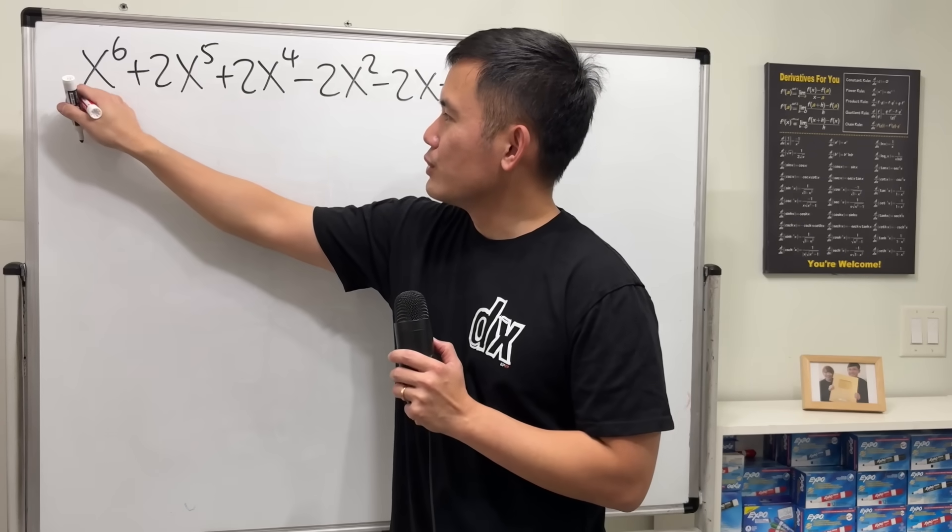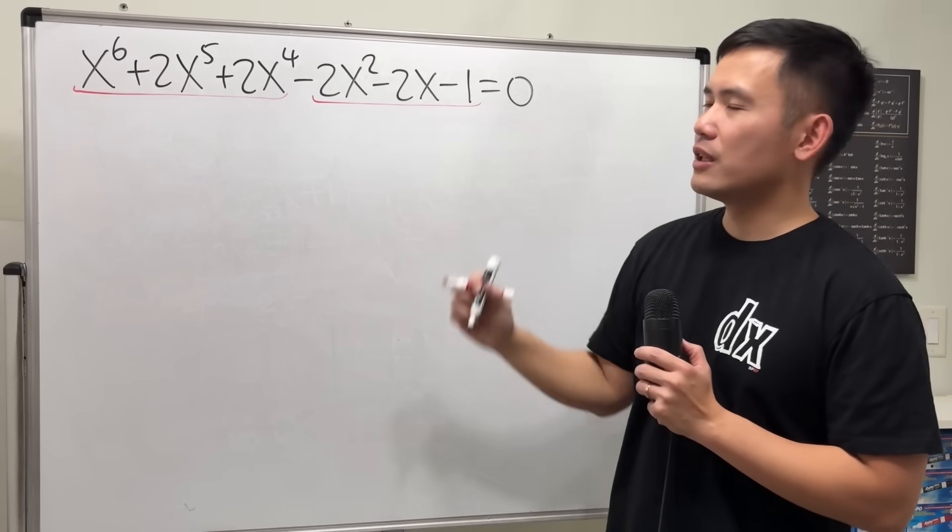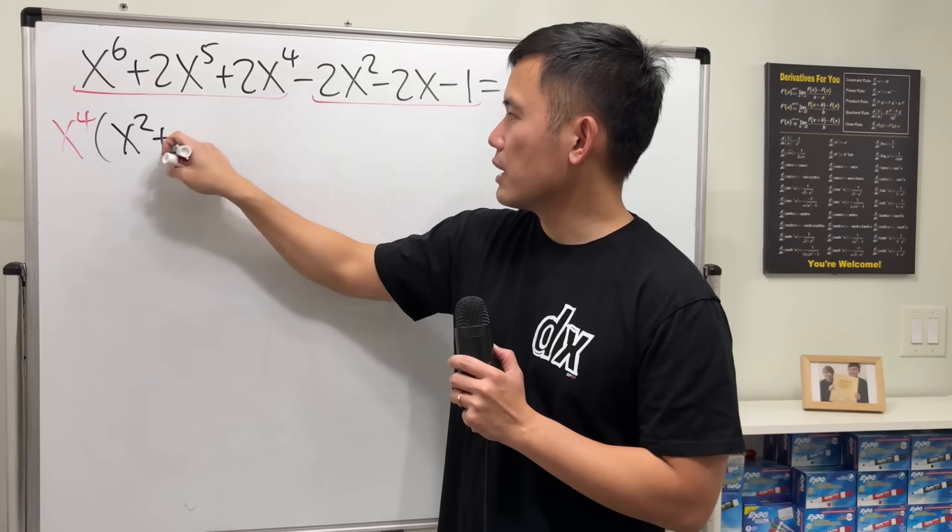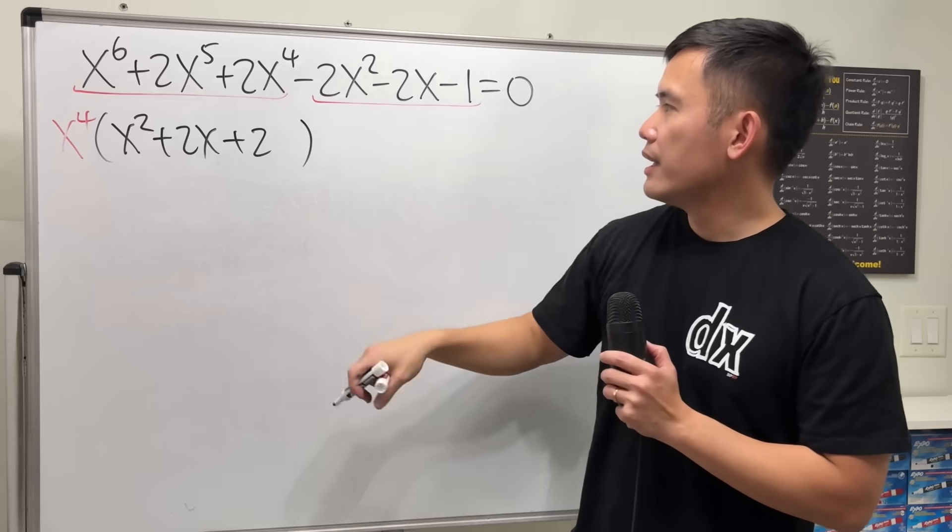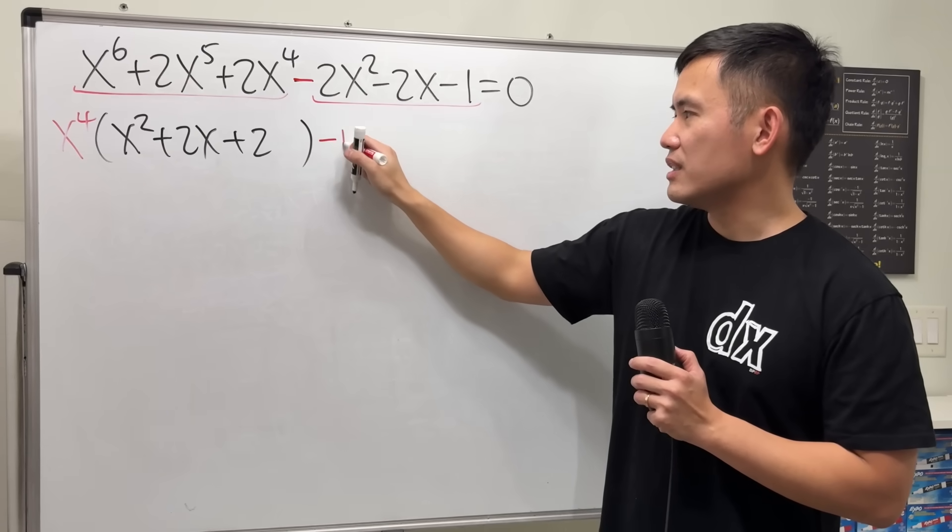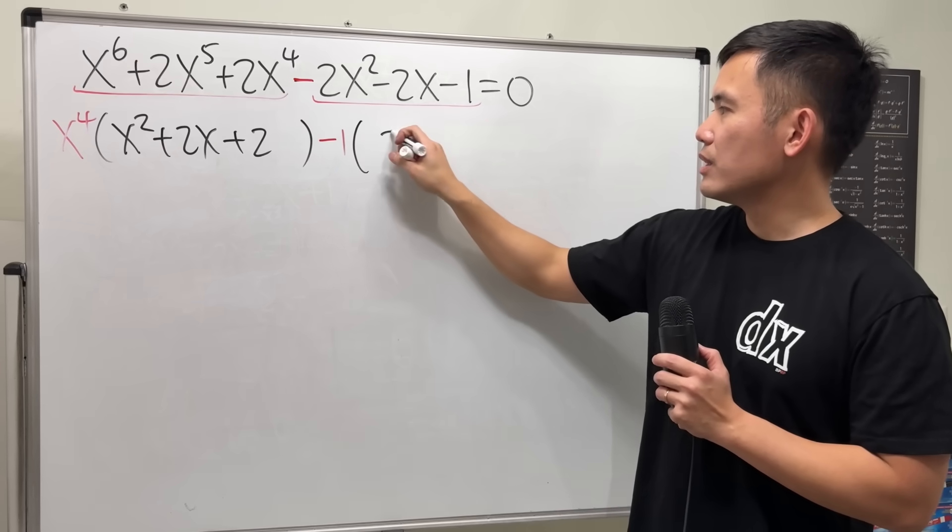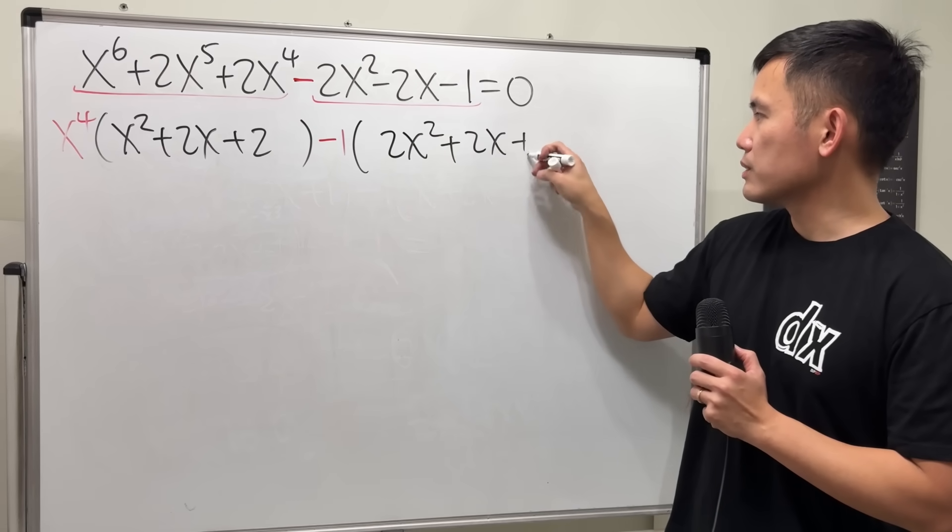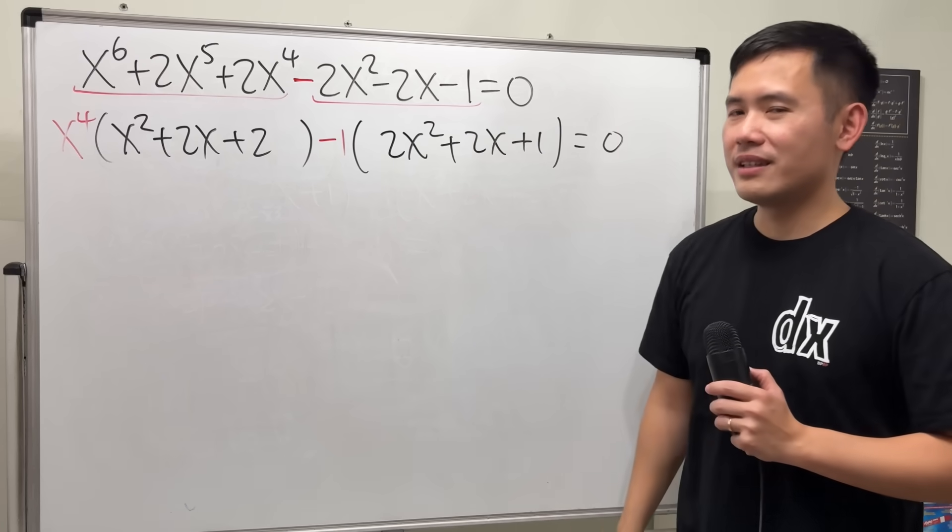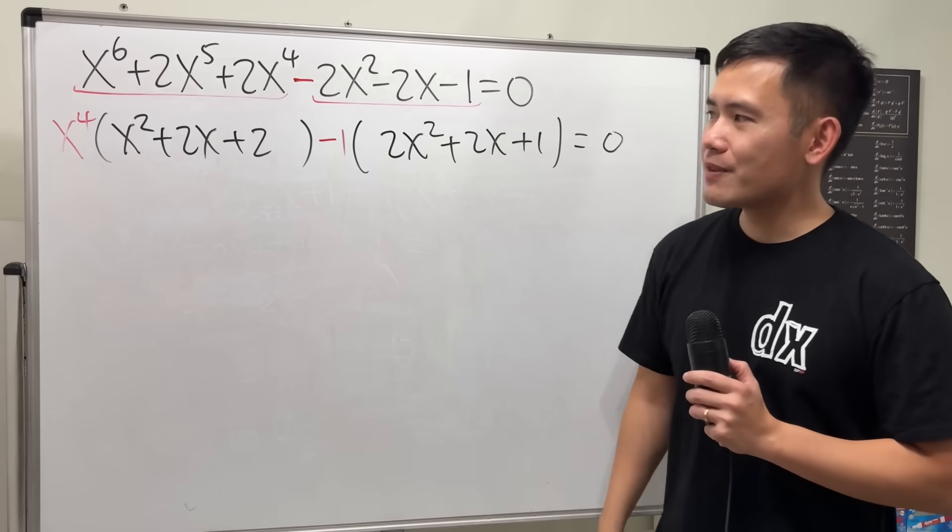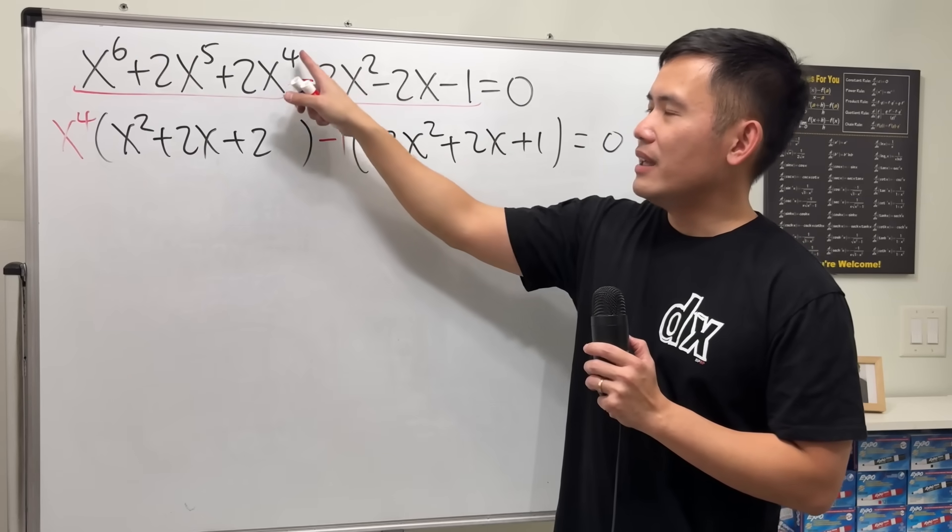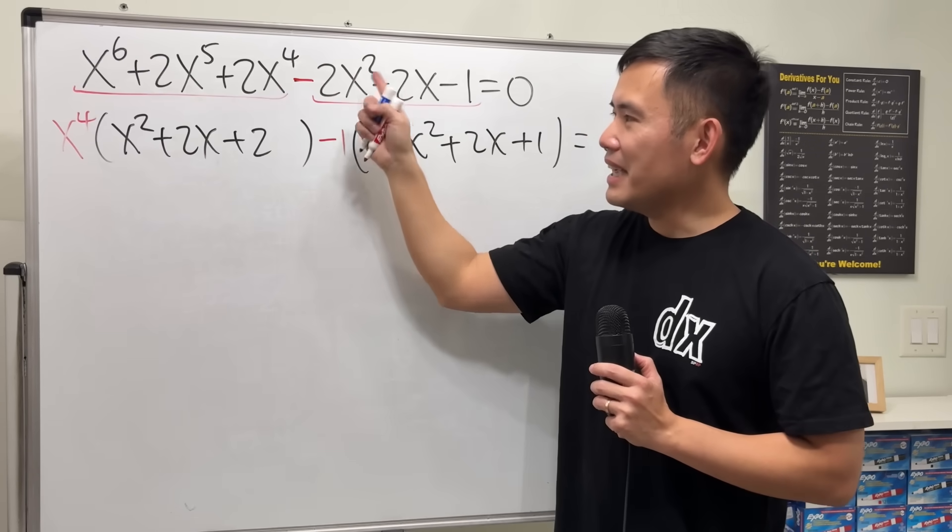Here, my first attempt was to just do it by grouping the first 3 and the last 3 terms. For the first 3 terms, I factor out x^4, and I get x^2 + 2x + 2. And then for the last 3 terms, because we have a minus here, so I have to factor out a negative, technically it's like a negative 1. And then I get 2x^2 + 2x + 1, and that's equal to 0. Unfortunately, this and that are not the same, so it looks like we cannot continue. Well, what do we do? If you look back to the equation here, you will see that x^3 is missing. That is the key.